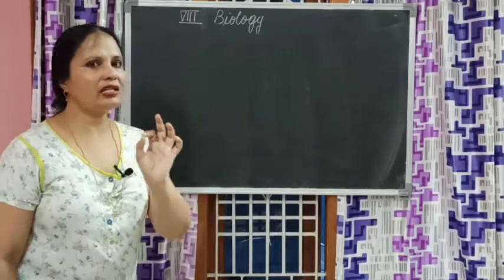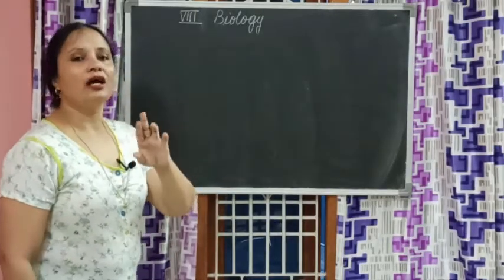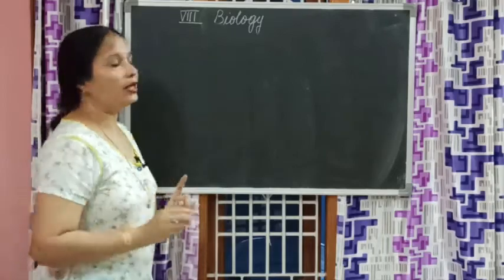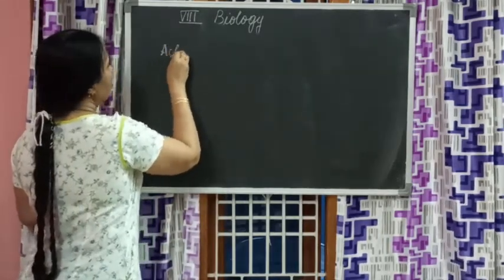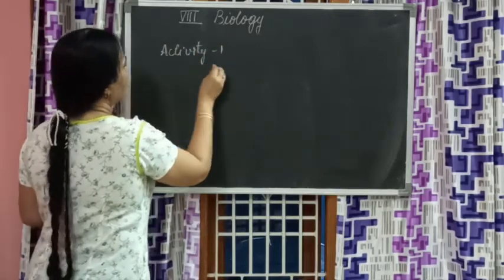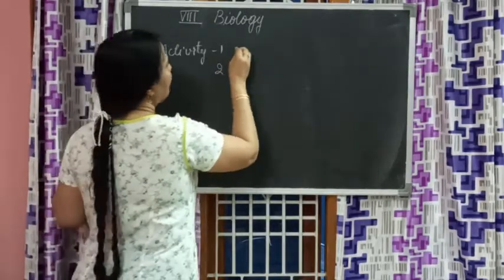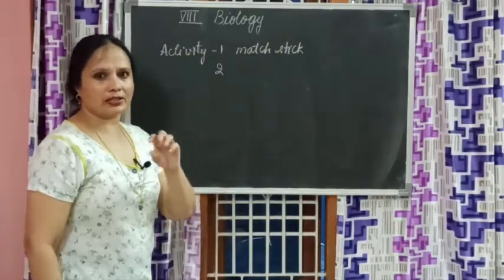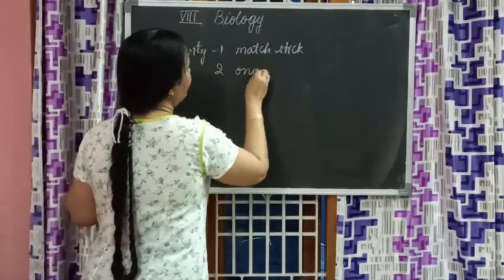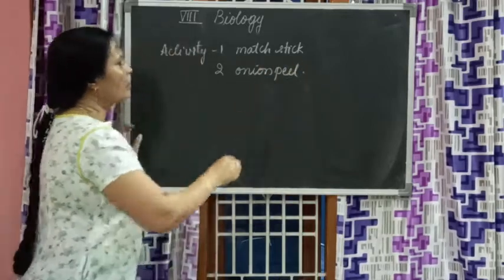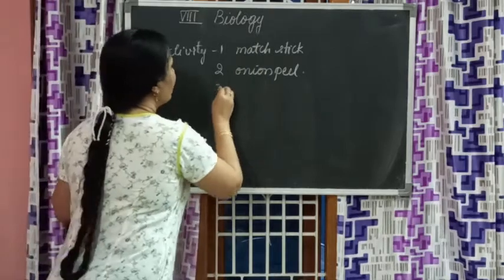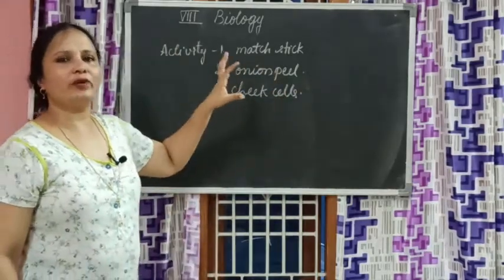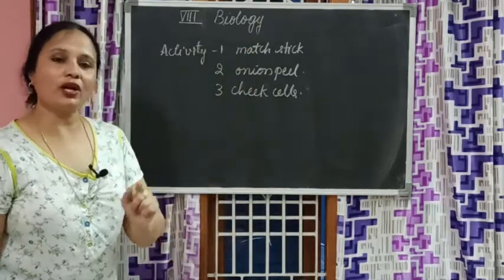Welcome back children. Just a slight minor change - we learned about activities one, two, and three in yesterday's session. Activity one is about matchstick - you observed matchstick for the arrangement of cells. Activity two is onion peel, and activity three is cheek cells. These three activities are to observe that cell arrangement is present, meaning everything is made up of cells.